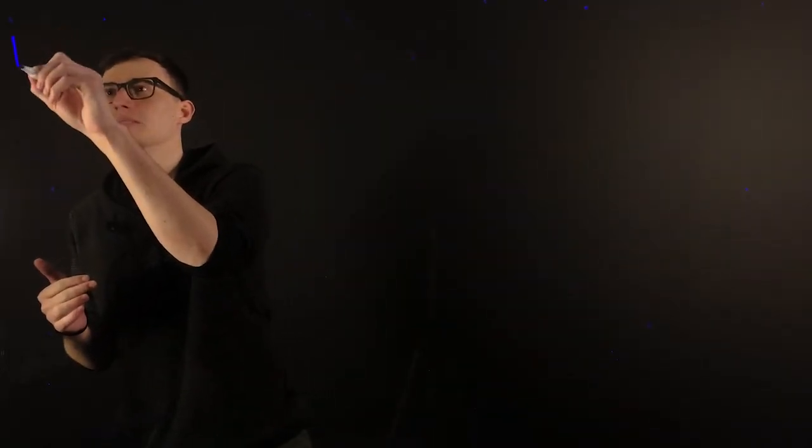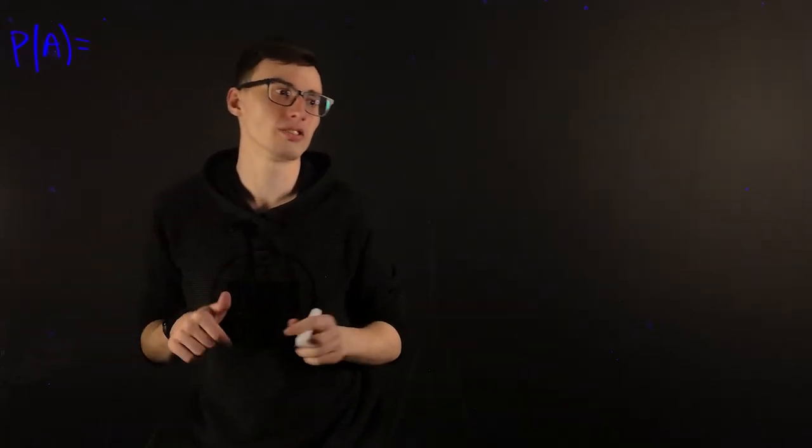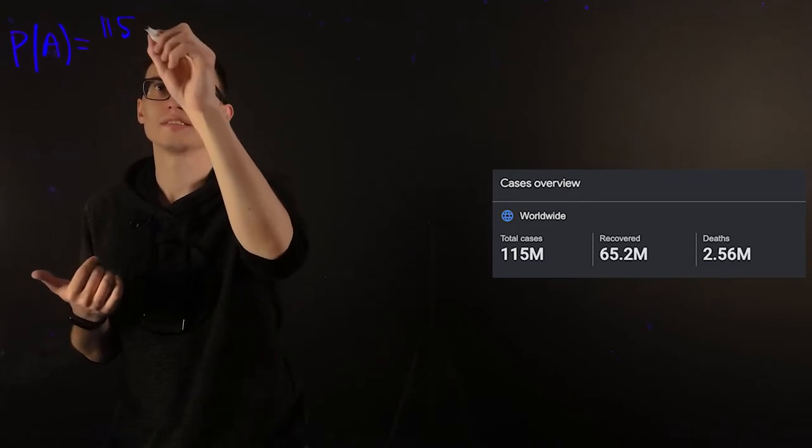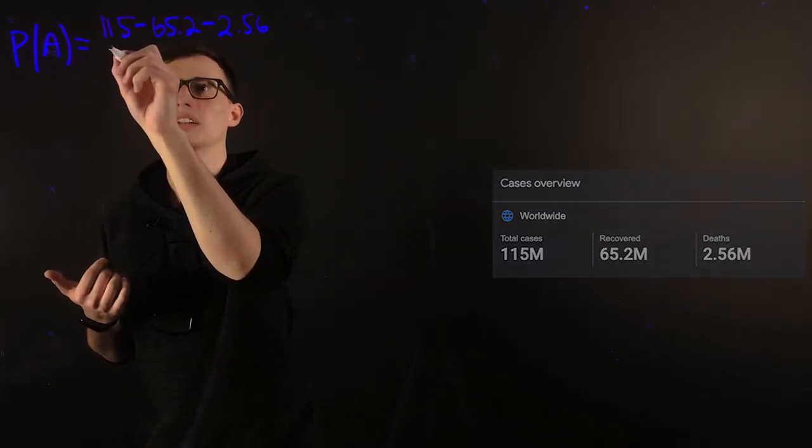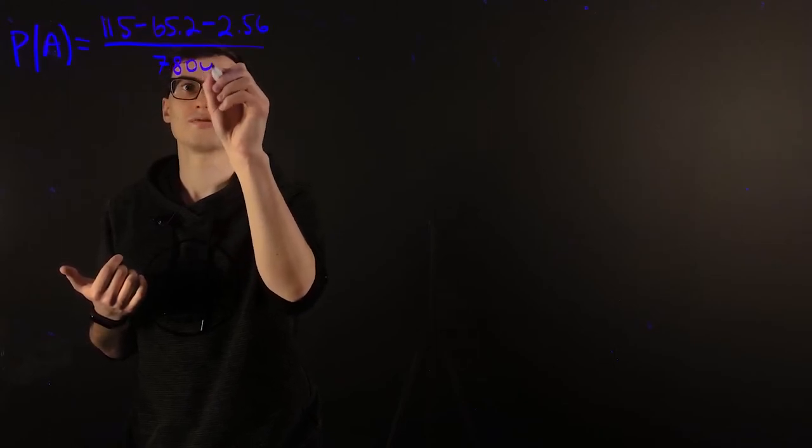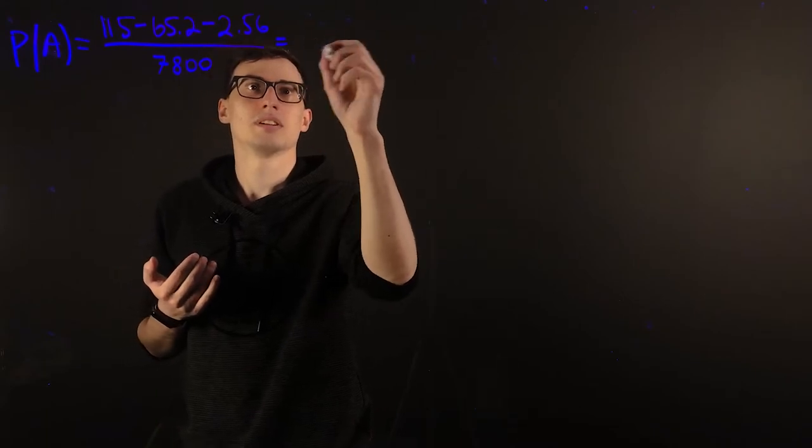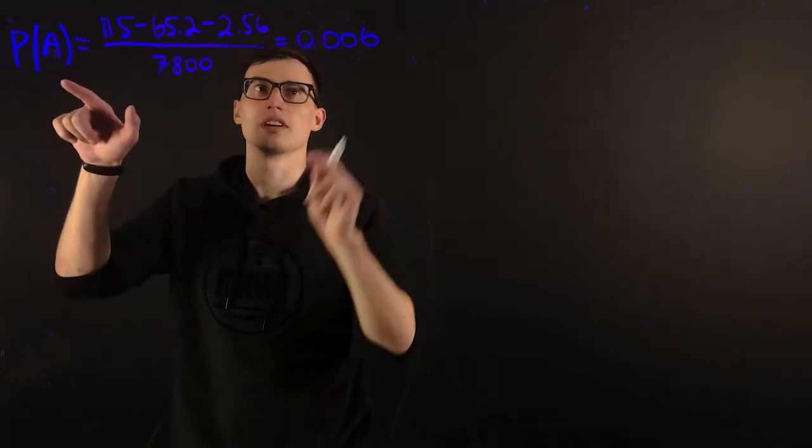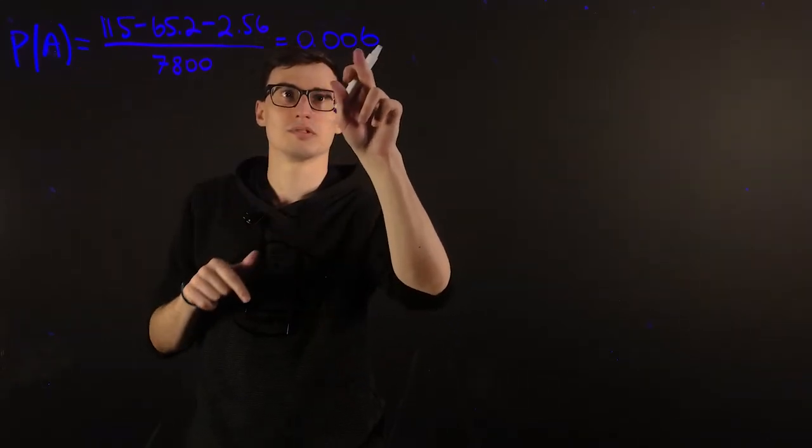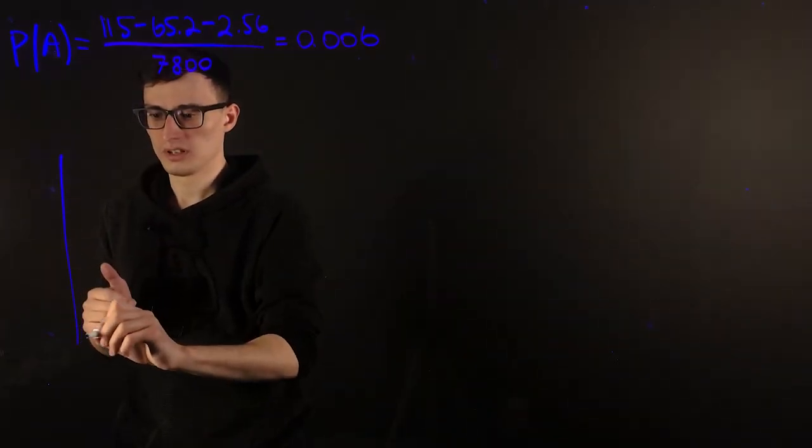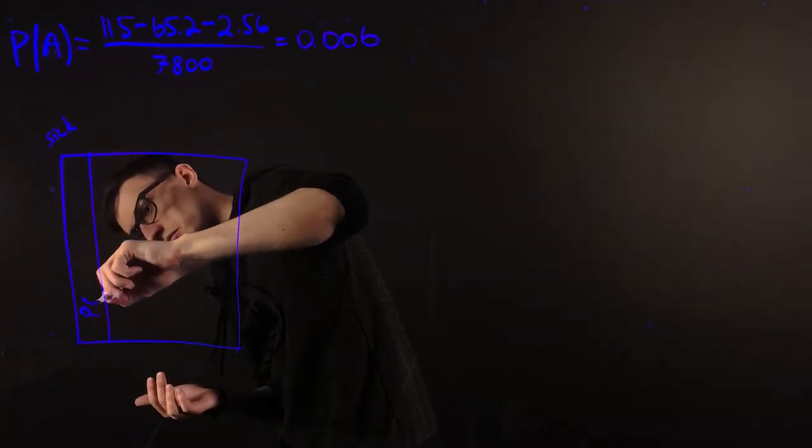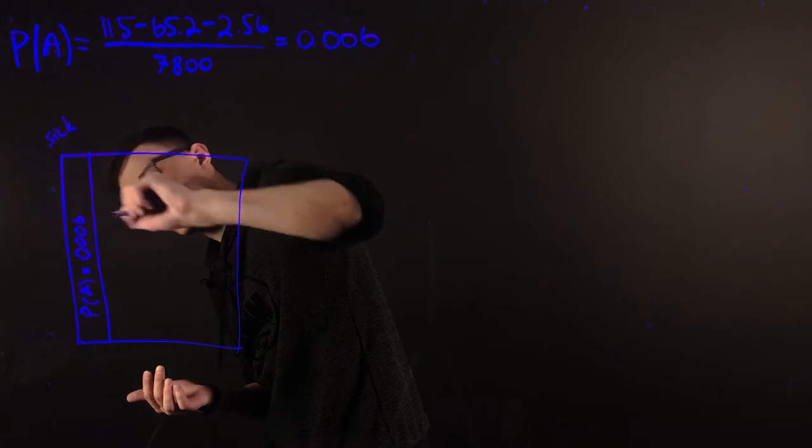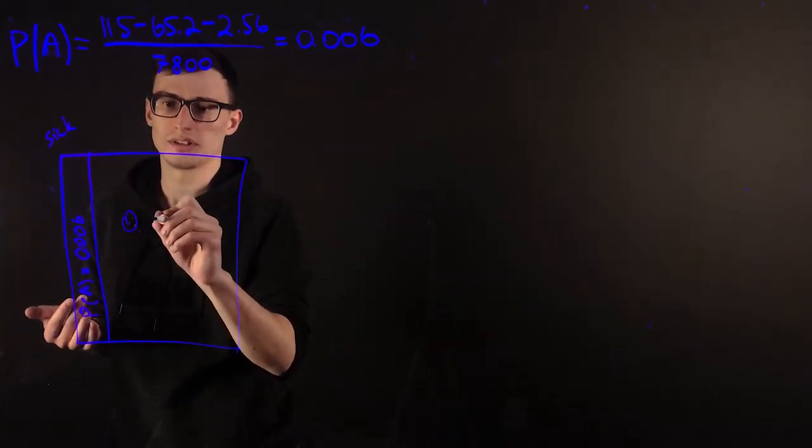Now let's do a real world example with everybody's favorite topic, coronavirus. So our P of A, the probability of being sick right now is what? Well, if you take a look at the current data and today's March 4th, we have 150 million total cases minus 65.2 million people recovered and minus 2.56 million people died divided by 7.8 billion and this gives us about 0.006 P of A.